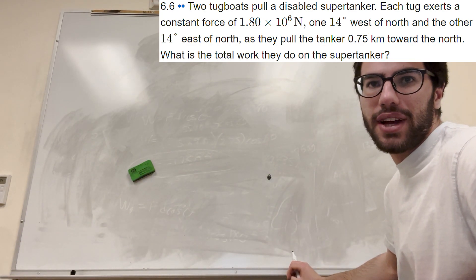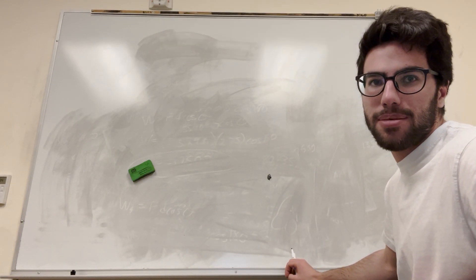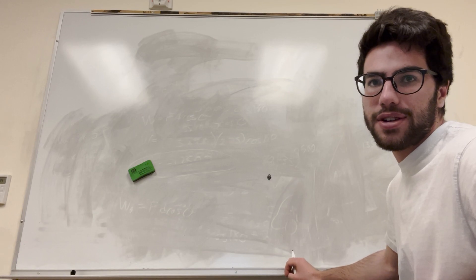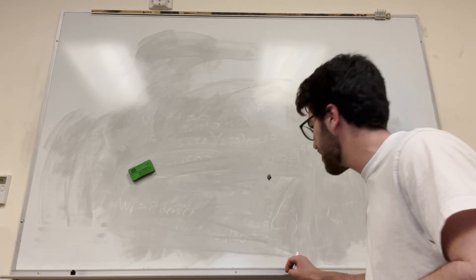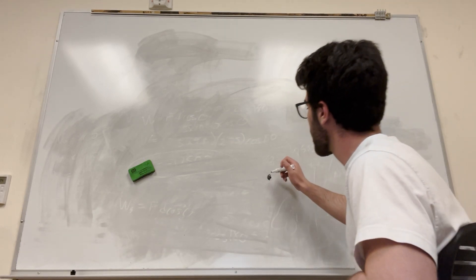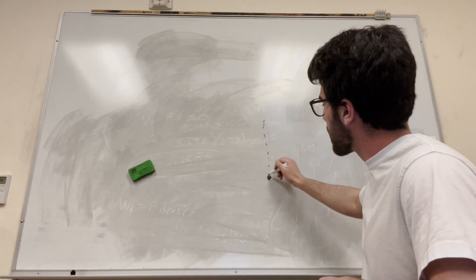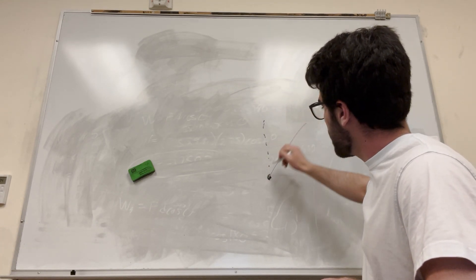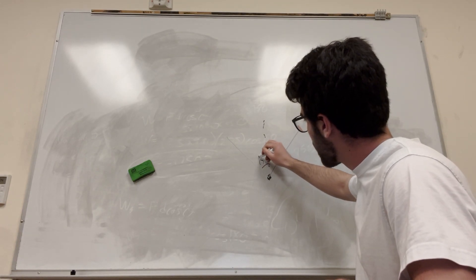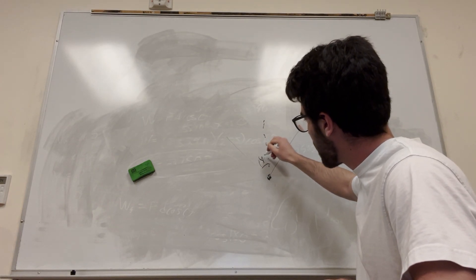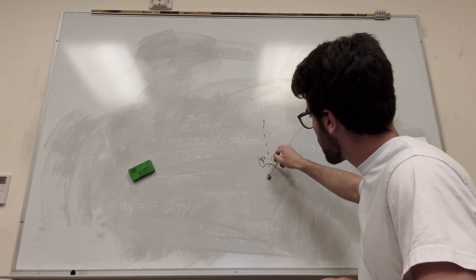Let's go through every part that we have. We have both of them pulling at a constant force, 14 degrees west and east of north. So here's north — here's 14 degrees on one side, and 14 degrees on the other side.